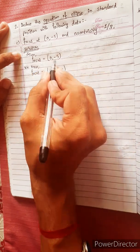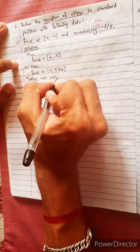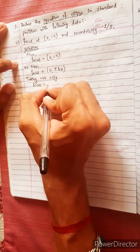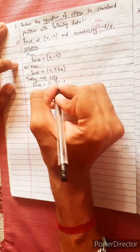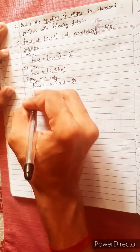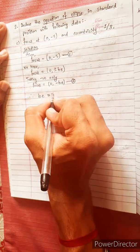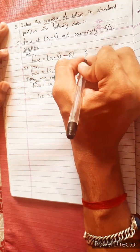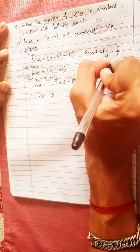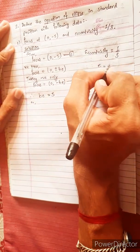We will see the focus formula. Taking the negative only — focus equals (0, minus b), minus c. Eccentricity is the formula, and eccentricity e equals 1 by 3.